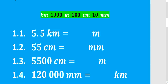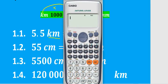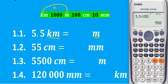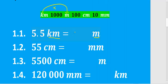For 1.1 we want to convert kilometers to meters. We're going from kilometers to meters — going forward — so we need to multiply. 5.5 multiplied by 1000 gives us 5500. So that is our solution: 5500.